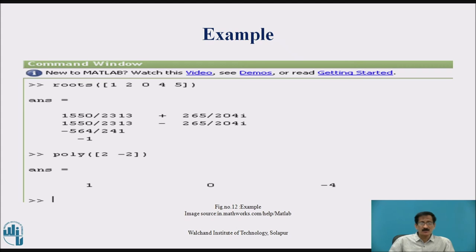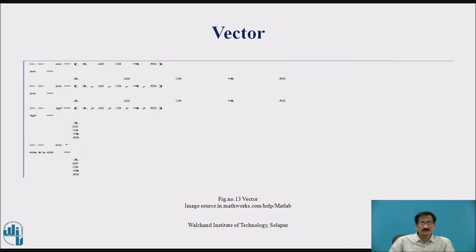Here is the polynomial of [2, -2] giving answer [1, 0, -4]. This is the vector — the value of vector x is given, then y is given. y = x' will convert the row matrix into a column matrix.